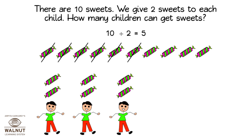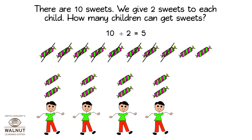There are four sweets left. Then we take away two more sweets and give them to another child. So it's four children who have sweets. There are two sweets left. Then we take away two more sweets and give them to another child.